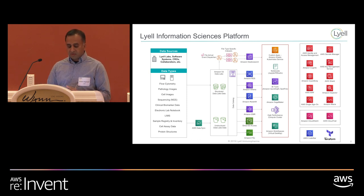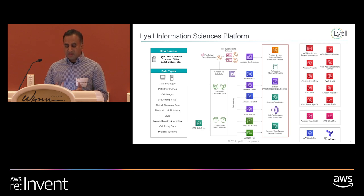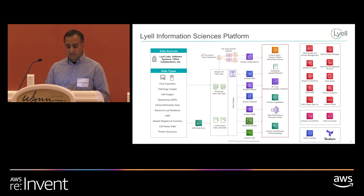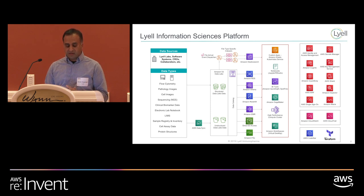The platform that we're building in the Information Sciences group — I'm not going to go through all the details, but there are a few interesting points to illustrate. We have a lot of different sources for this data: our labs in Seattle, our labs in South San Francisco generating the bulk of the data, and we also work with CROs and collaborators. One of the biggest and most interesting challenges at Lyle is just the huge diversity of data that we have.